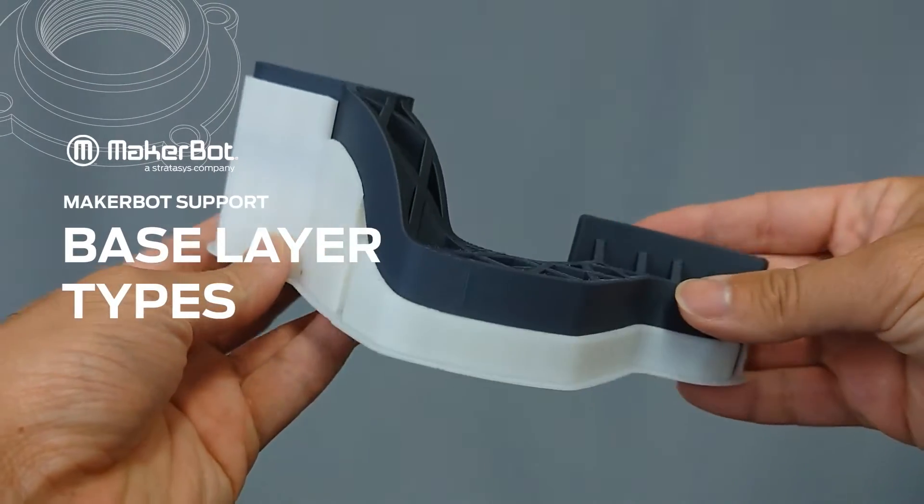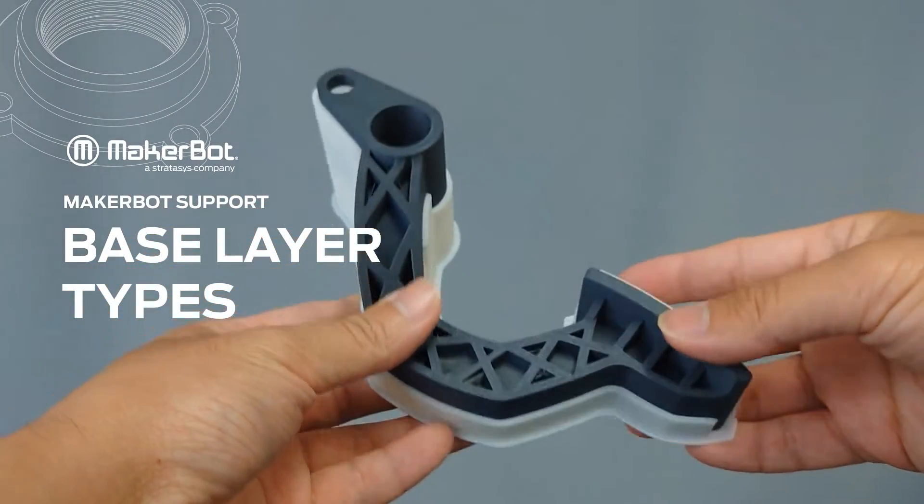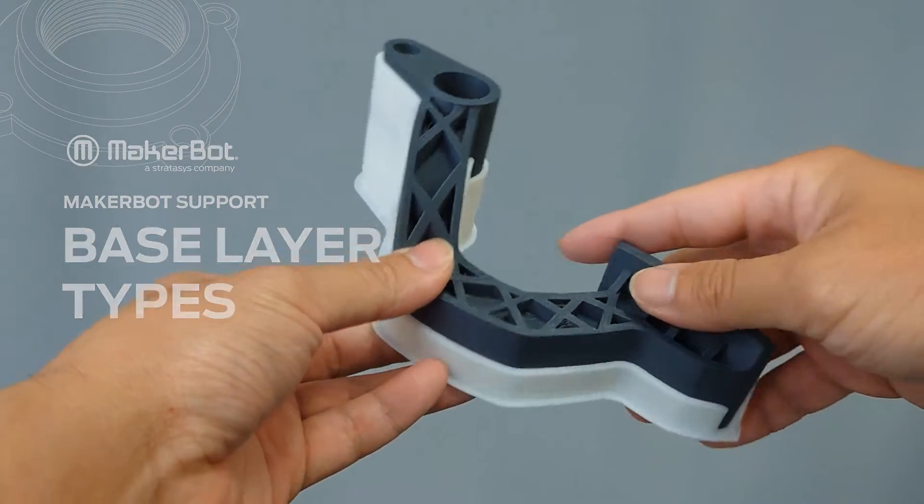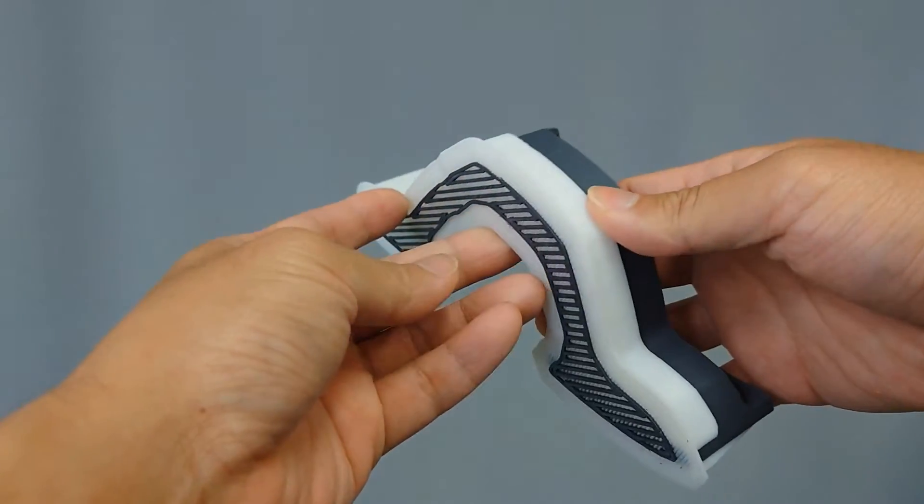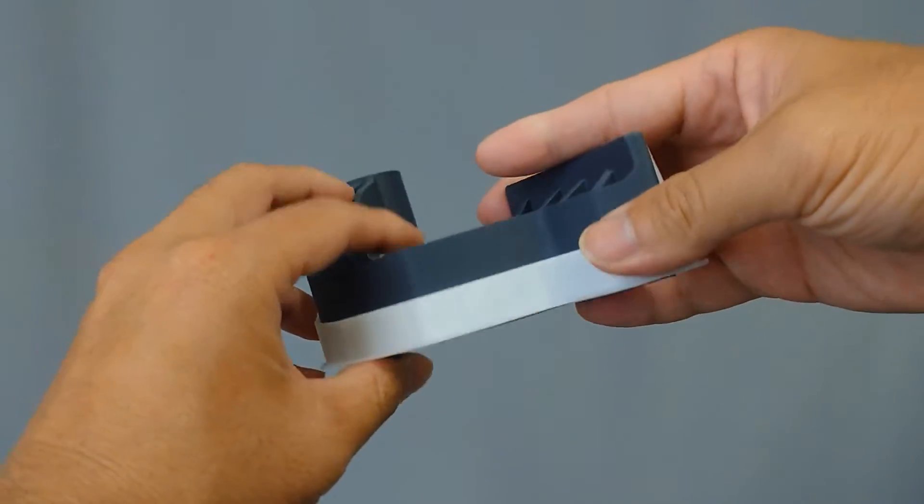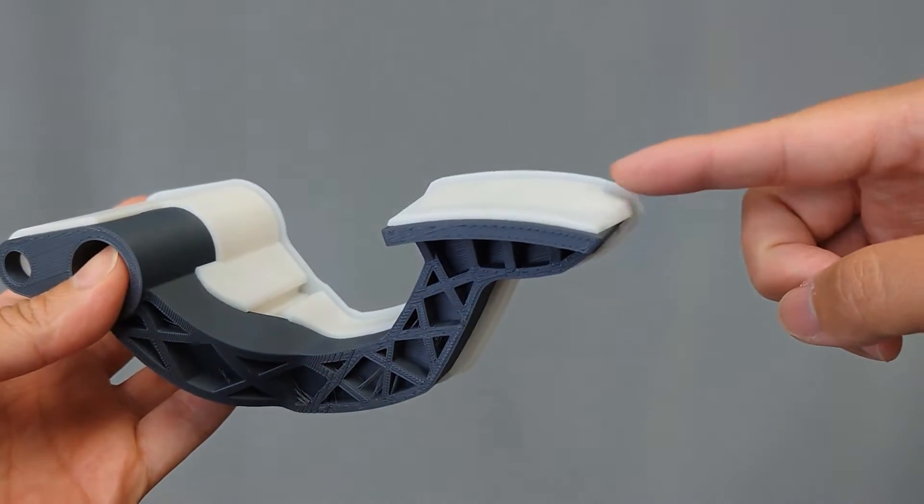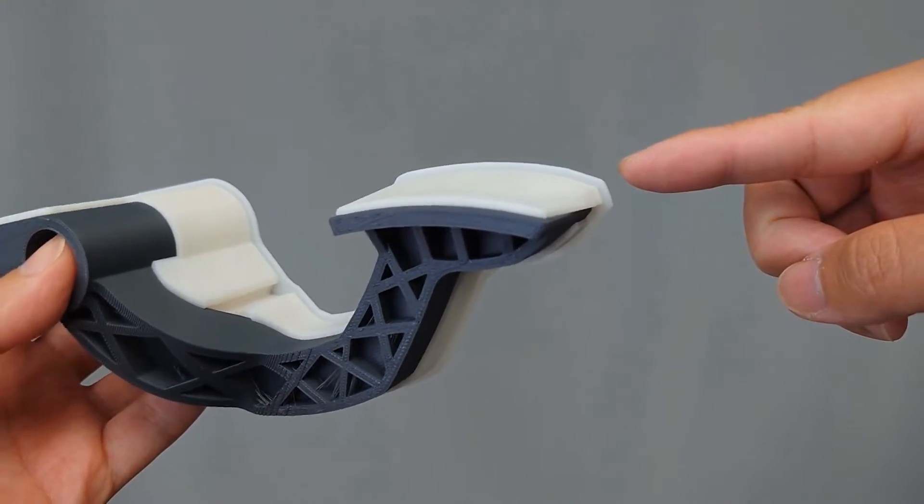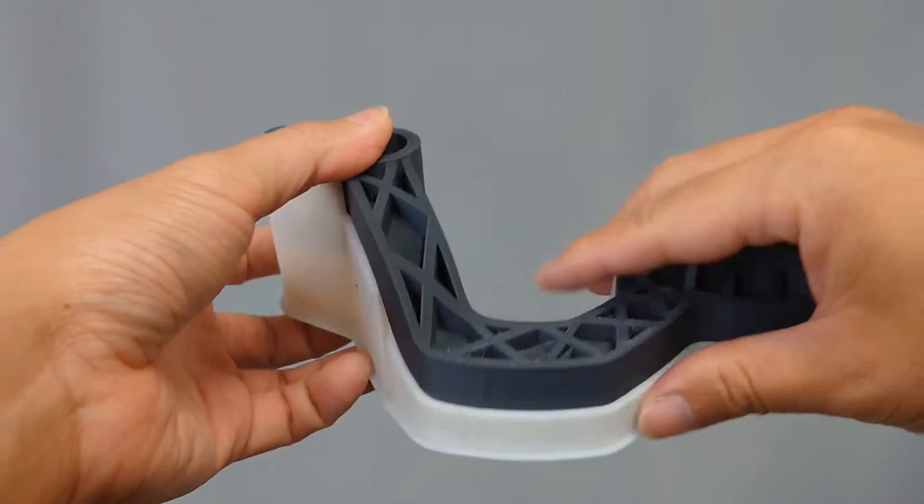In this video, we will discuss different base layer types that can be used to produce models on your MakerBot method. The default base layer type is a raft, which each model will print by default when using MakerBot Cloud Print and MakerBot Print.